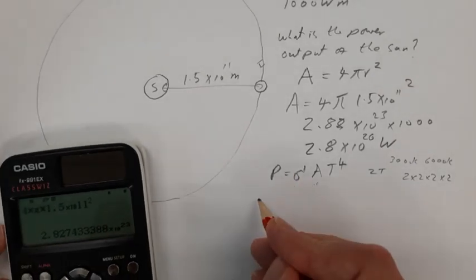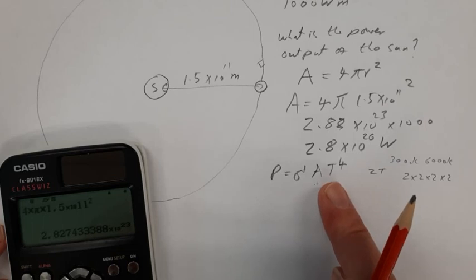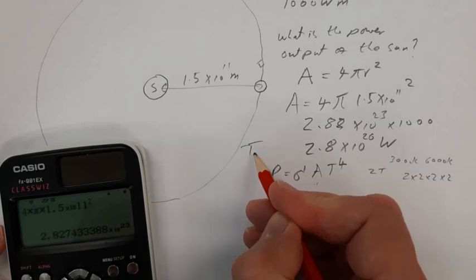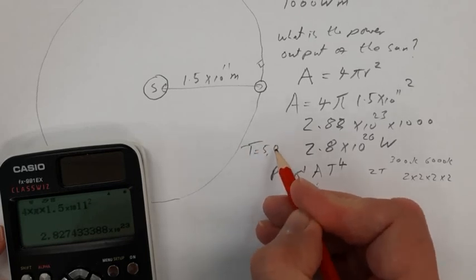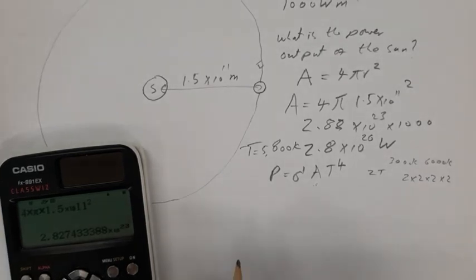So we know the power output of the sun is 2.8 times 10 to the 26 watts. You know the temperature of the surface of the sun. We just worked that out. It was 5,800 kelvins. So you should now be able to work out the surface area and then the radius of the sun. So pause the video now and have a go at that calculation.